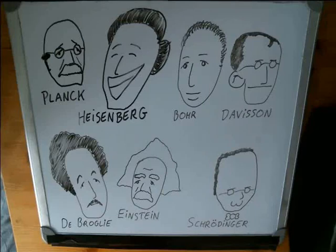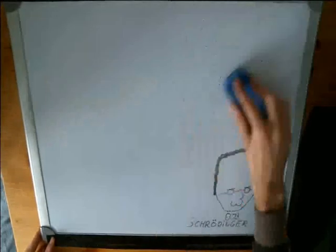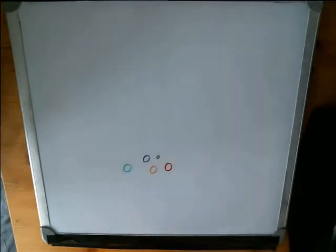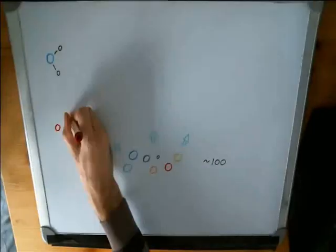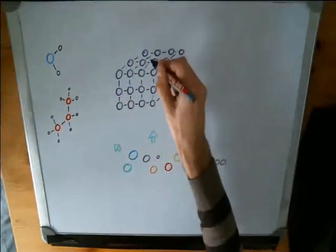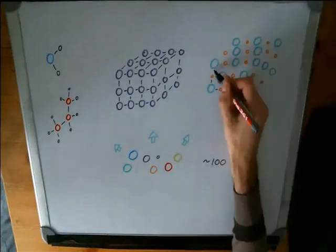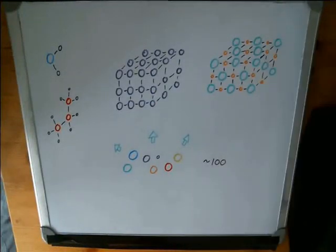These guys already knew a lot about atoms from the scientists who came before them. For instance, they knew that there are about a hundred different atoms in nature, and that these atoms join in larger structures such as molecules, metal lattices, and salt lattices to make everything we see around us.